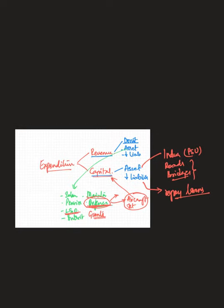This is how budget expenditures are classified today. Among major revenue expenditures, food subsidies and fertilizer subsidies constitute the largest in terms of revenue expenditure. But the overall largest expenditure is repayment of loans, as we have seen in the graph previously.